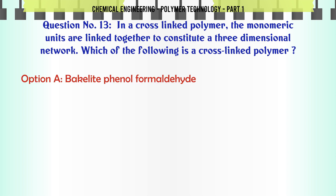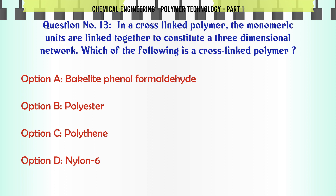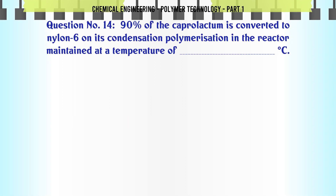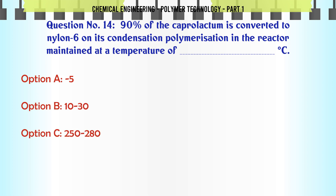In a cross-linked polymer, the monomeric units are linked together to constitute a three-dimensional network. Which of the following is a cross-linked polymer? A. Bakelite (phenol formaldehyde), B. Polyester, C. Polythene, D. Nylon 6. The correct answer is Bakelite (phenol formaldehyde).